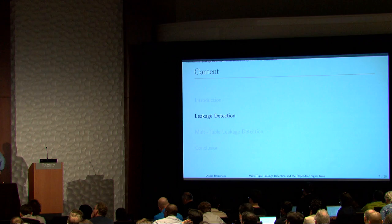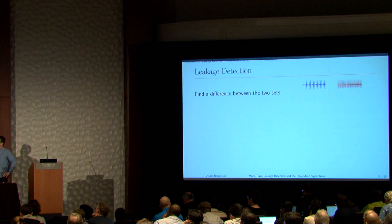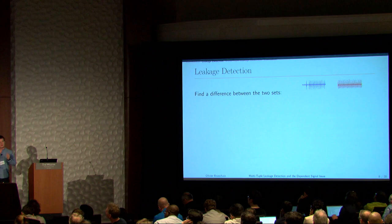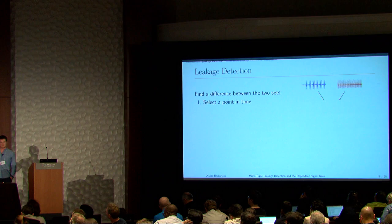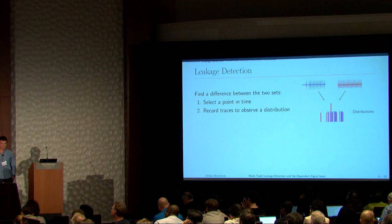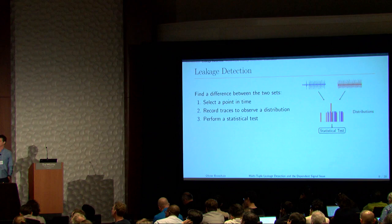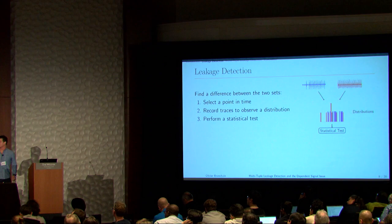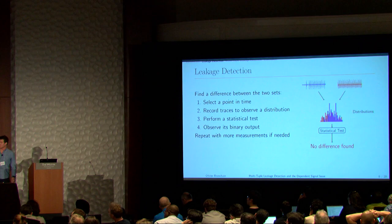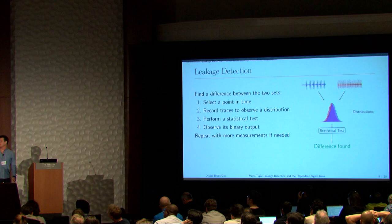In practice, leakage detection works by selecting a point in time from both sets of traces, collecting measurements, and observing the distribution at that point in time — represented by histograms. You then run a statistical test to determine if the device is leaking. You observe the binary output of the test, and if differences aren't found, you take more measurements until you have a fine understanding of the distributions.